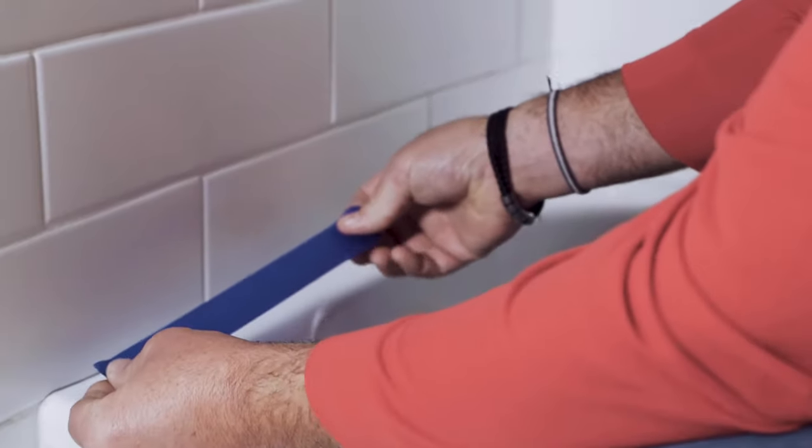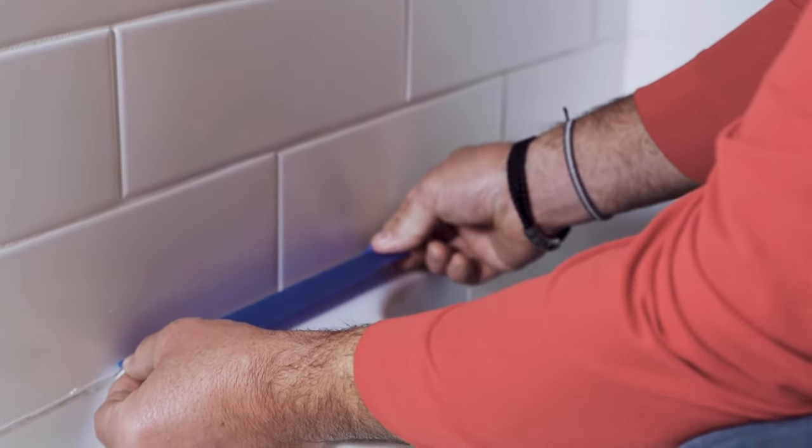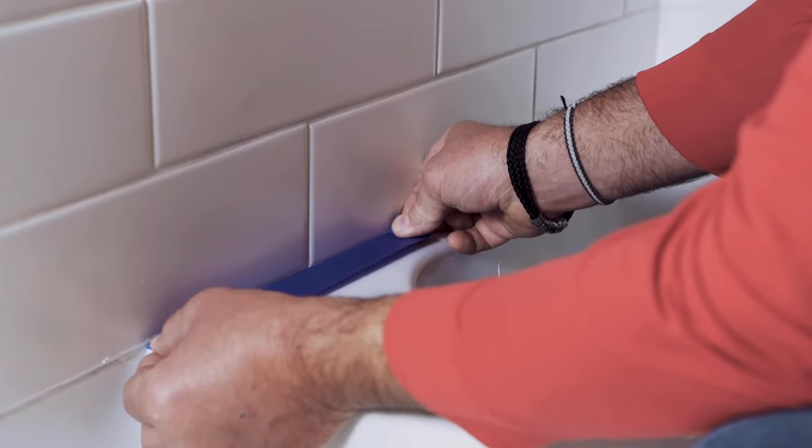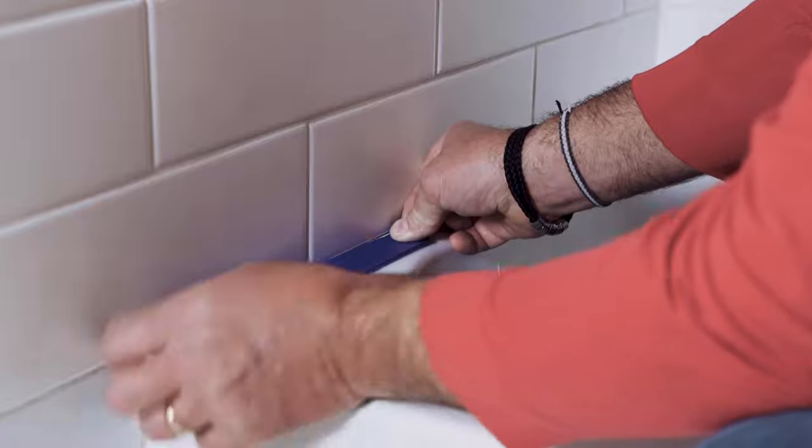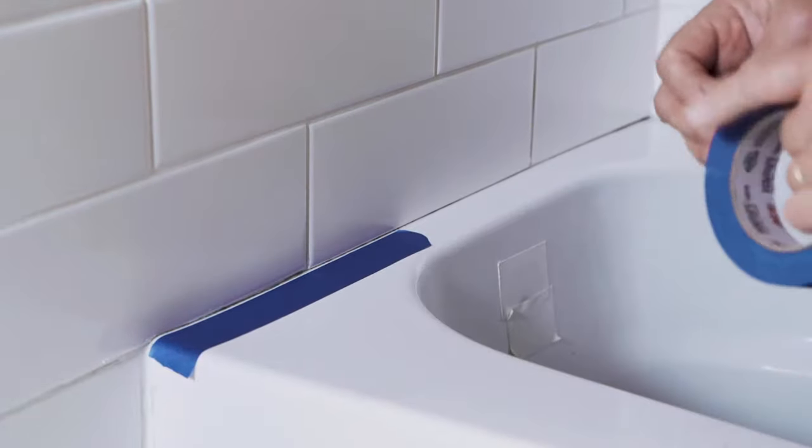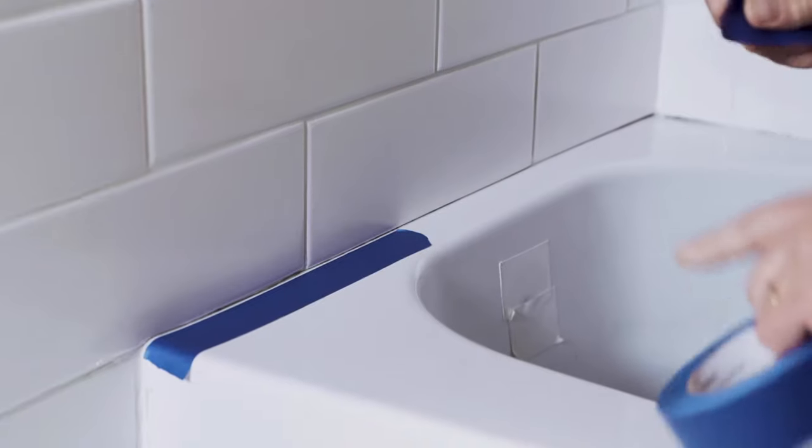Now I'm going to take some blue painter's tape and place it right on top of the tub here about an eighth to a quarter of an inch away to create a straight line. This is going to help you get professional results.